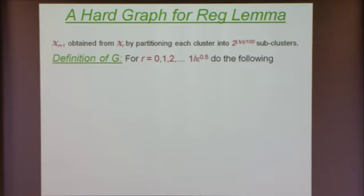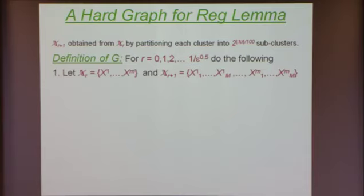I'm going to have 1 over square root epsilon many iterations, and in each iteration I'm going to keep adding more and more weight to some of the edges of the graph. Suppose we are at iteration r — we've already added some weights to some edges, and now we are at iteration r. Let me name the clusters in partition X_r by X_1 up to X_m.